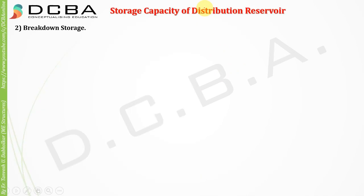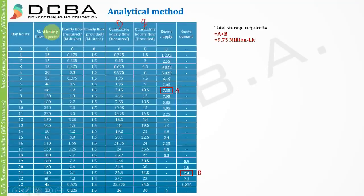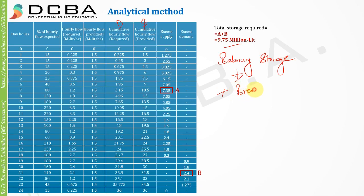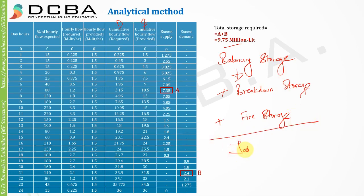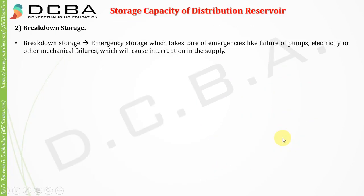Moving to the next capacity, which is breakdown storage. This has to be added to the previous balancing storage. Breakdown storage takes care of emergencies like pump failure, electricity not being available, or mechanical failures, which will cause an interruption to the supply.